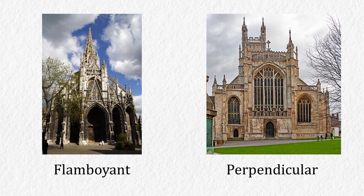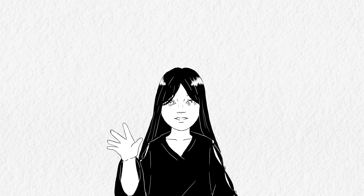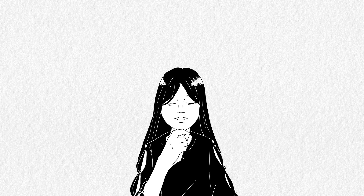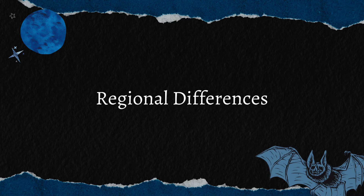Just by comparing the development in France and England, we can already see so many regional differences, even though they are both called Gothic. What are the other regional differences of Gothic architecture in other European countries? Aside from France and England, other countries also have their own unique way to design Gothic buildings, and here are some examples.